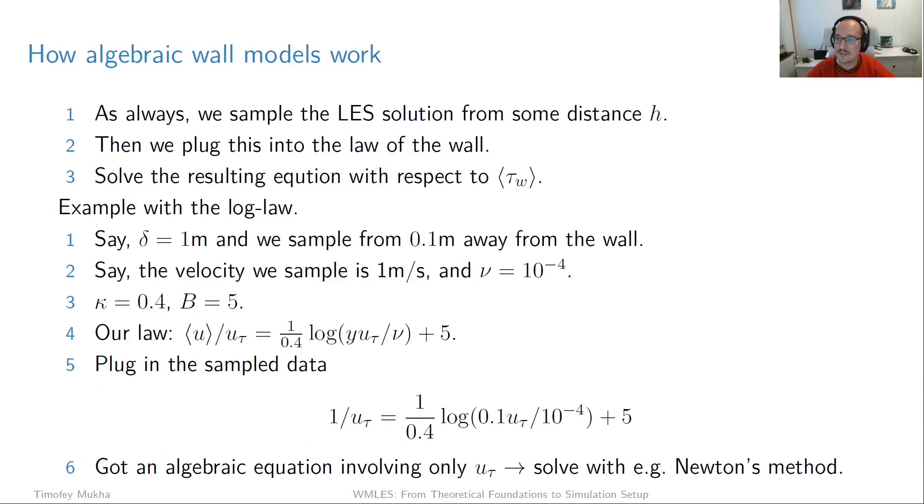So let's see how it works in practice. So there are three steps to this. And the first step is the same as for all the other wall models. And that is that you sample your LES solution at some distance from the wall. So you grab some data. And in particular for the log law, what we need to grab is the velocity value. And then what you do is you plug in that data into the law of the wall. And as we will see shortly, you end up with an equation from which you can solve for tau wall.